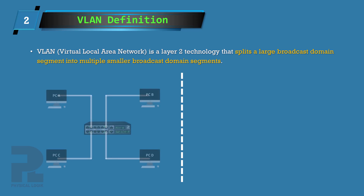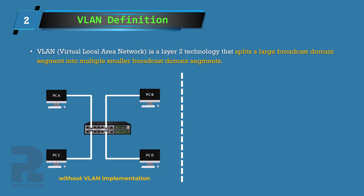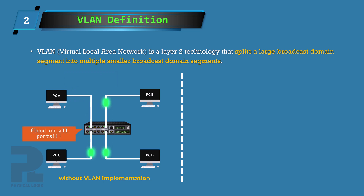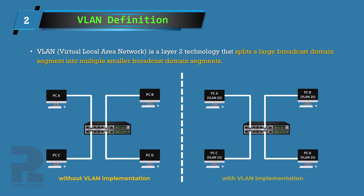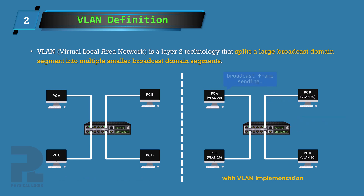Before VLANs are implemented on a network, all end devices connected to a LAN switch form a part of the same broadcast domain, which means they can receive the broadcast and unknown unicast traffic flooded by the switch. With VLAN implementations however, connected users and terminals can be split into separate logical LANs called VLANs. In this way, broadcasts on one VLAN segment will not be flooded to other VLAN segments, and these segments at layer 2 are completely isolated from one another.